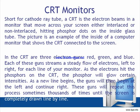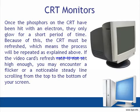As the electrons hit the phosphors on the CRT, the phosphors will glow at certain intensities. As a new line begins, the guns will start at the left and continue right, repeating this process sometimes thousands of times until the screen is completely drawn line by line. Once hit, phosphors only glow for a short period, so the CRT must be refreshed. If the video card's refresh rate is not set high enough, you may encounter a flicker or a noticeable steady line scrolling from the top to the bottom of your screen.